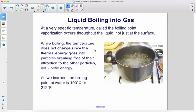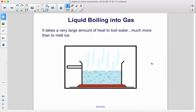At a very specific temperature called the boiling point, vaporization occurs throughout the liquid, not just at the surface. While boiling, the temperature does not change since the thermal energy goes into particles breaking free of their attraction to other particles, not kinetic energy. As we learned, the boiling point of water is 100 degrees Celsius or 212 degrees Fahrenheit. It takes a very large amount of heat to boil water, much more than to melt ice.